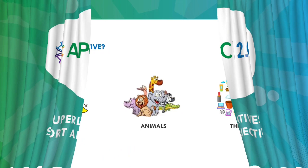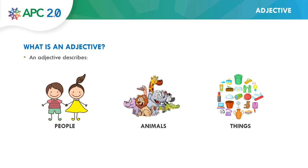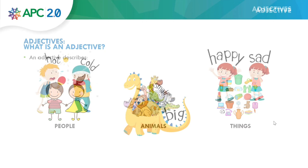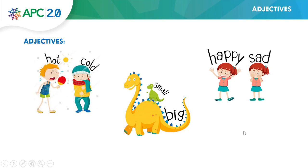But first, we are going to review what is an adjective. Do you remember that? An adjective describes people, animals, and things. Here I have some examples of adjectives. Look at this: hot, tough, small, big, happy, and sad. Now it's your turn.